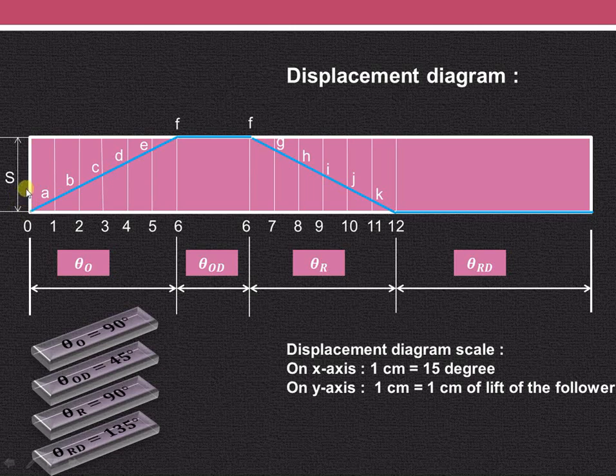So this length, the stroke of the follower is 3 cm. So this length will be of 3 cm. So 90 divided by 15 that is 6 cm, and we have divided it into 6 equal parts.